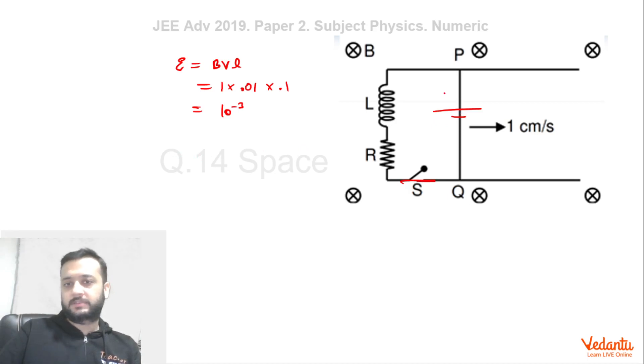Now, this becomes an LR circuit. So we already know the current in the LR circuit can be written as I equals E by R into 1 minus e to the power minus t by tau. Tau is nothing but L by R.